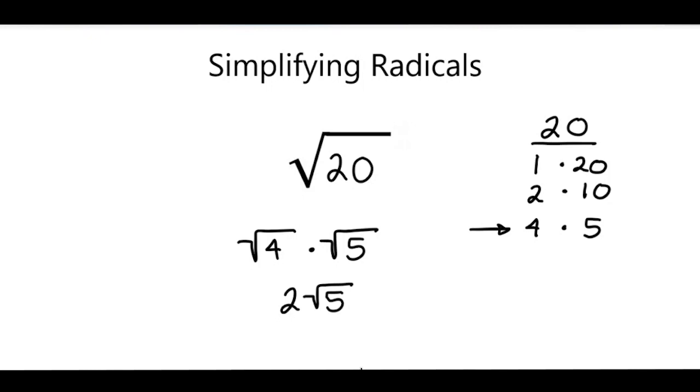And it can be written like this. So we would say 2 times the square root of 5, or just 2 square root 5.